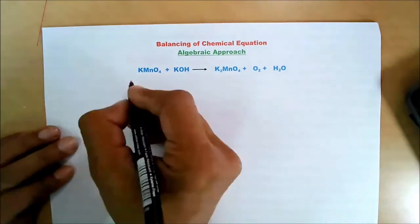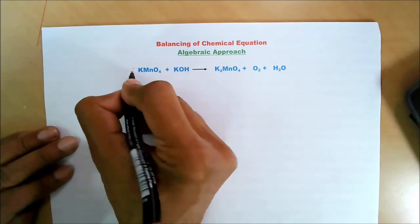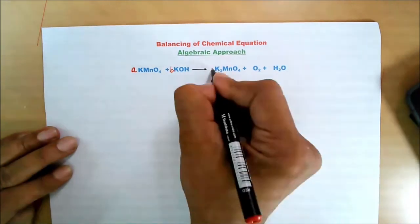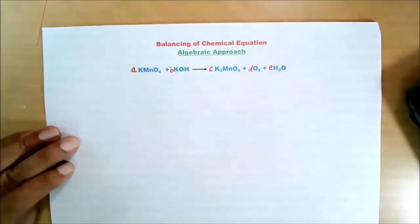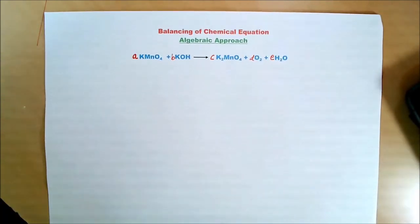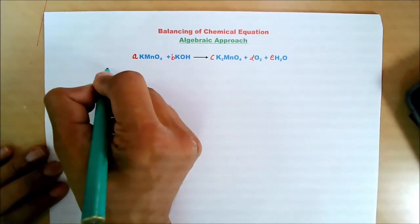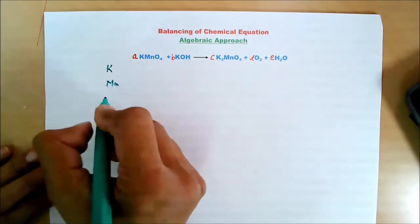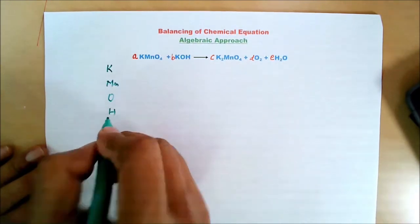We shall do it more quickly. I am putting up the coefficients a, b, c, d, and e. Then we will make a list of elements: potassium, manganese, oxygen, and hydrogen.